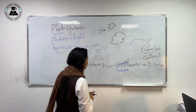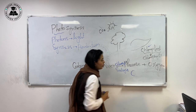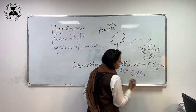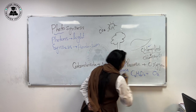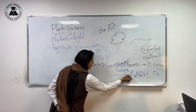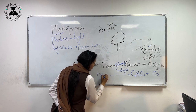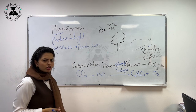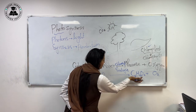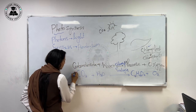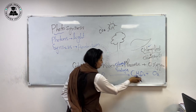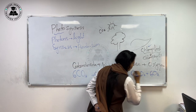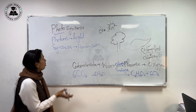Let's talk about the chemical equation of photosynthesis. Plants produce glucose — its formula is C6H12O6 — and oxygen, O2. The reactants are water (H2O) and carbon dioxide (CO2). The equation is not balanced as written, so we balance it: we have 6 carbons, so we write 6 in front of CO2; we have 12 hydrogens, so we write 6 in front of H2O; and we have 6 molecules of oxygen on the product side. So this is the balanced equation of photosynthesis.